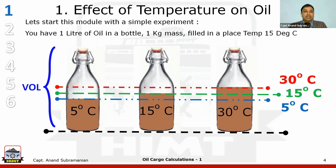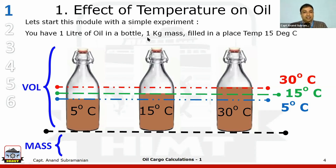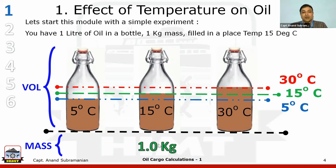This is all known to us. Now let us look at the mass part of it. In the initial condition, the mass — the weight of the oil — is 1 kg at 15 degrees Celsius. When we move the oil to a colder climate, to 5 degrees Celsius, what happens to the mass? There is no change in mass.